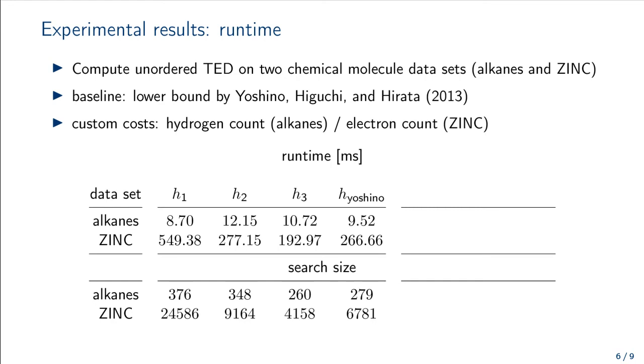So far, we have only considered unit costs for all edits, meaning all edits cost the same. Now, let's investigate custom costs, namely the difference in hydrogen count for alkanes, and the difference in electron count for zinc. These custom costs mean that options which previously costed the same now have different costs. This means less options to explore. For zinc, we save about 75% of the search space, which is reflected in much shorter runtimes.